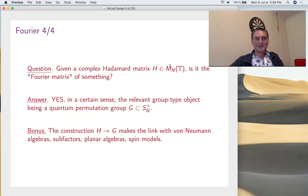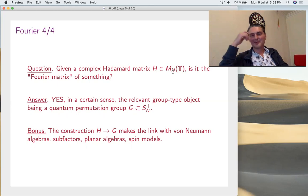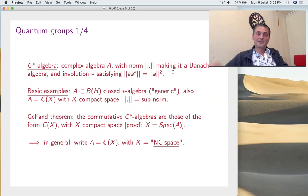Now the question is, it would be good, given a Hadamard matrix, to say that it's the Fourier matrix of something. Quantum algebra is just so big and there's probably some kind of quantum groups there. And the answer is yes, and the appropriate quantum groups are the quantum permutation ones. In addition, this makes the links with all this long story of von Neumann algebras, subfactors, planar algebras, spin models. So I'd say it's very interesting. We're going here into some advanced pure mathematics with this.